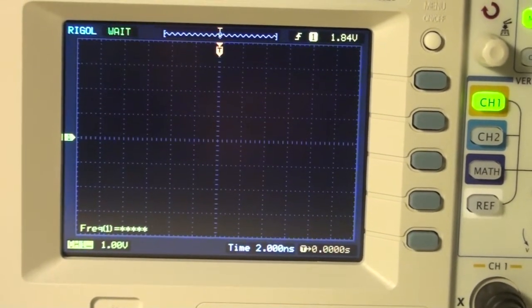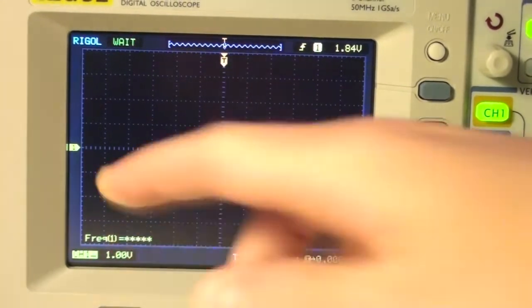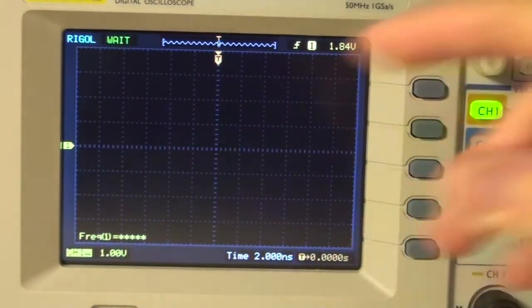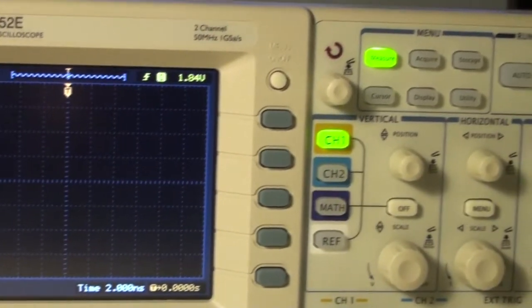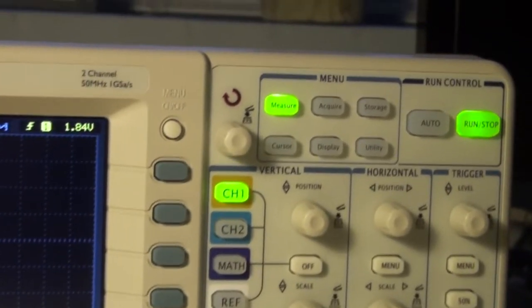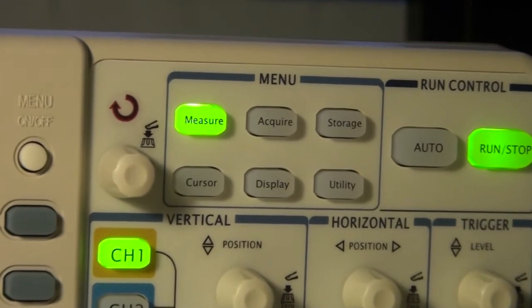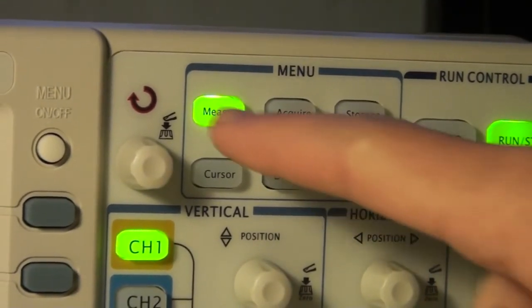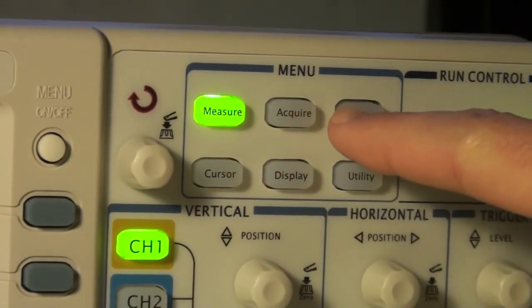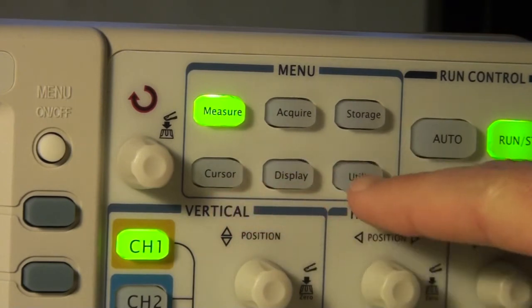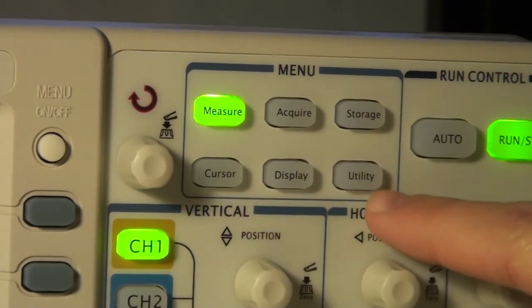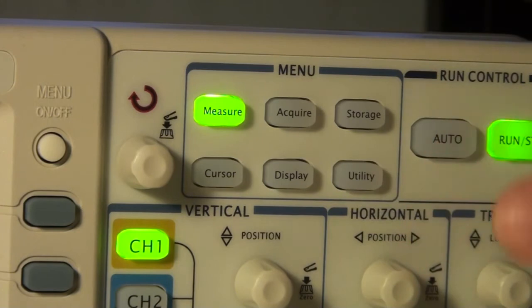You'll also notice that on the screen I have the frequency enabled. That's because I've enabled the measure function up here, which is the function panel. It consists of 6 buttons: measure, acquire, storage, cursor, display, and utility. Utility is for settings, while the others are functions you can enable.